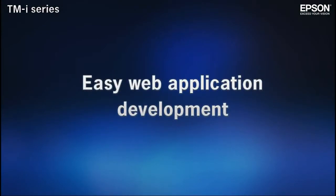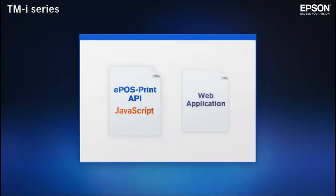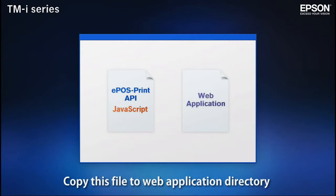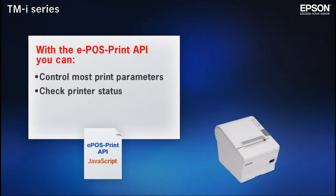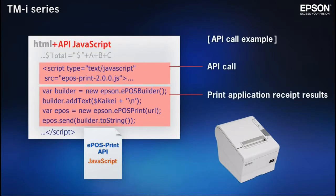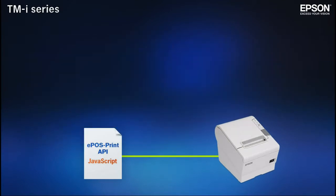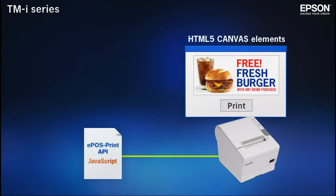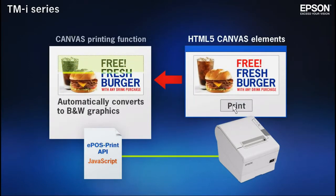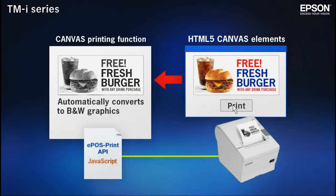With Epson technology, web application development is amazingly easy. Our JavaScript ePosPrint API makes it possible to check printer status and control a wide range of print parameters. Simply follow the instructions in the manual to invoke the JavaScript and enable your application to send XML data. The API's canvas printing function automatically converts HTML5 canvas elements to black and white graphics before sending them to the printer, so you can even include browser fonts and handwritten text in your printed receipts.